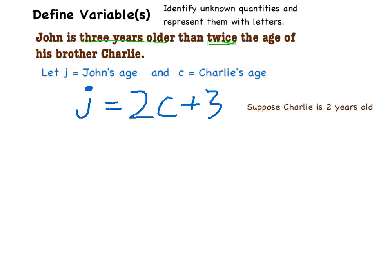Let's suppose for a moment that we now get some more information. We find out that Charlie is two years old. That changes things. Now if we know that Charlie is two, we can put that back into the equation and figure out John's age.